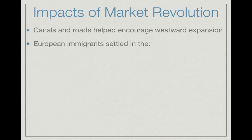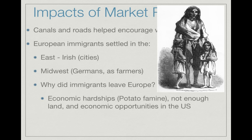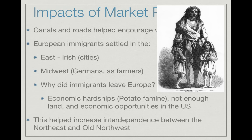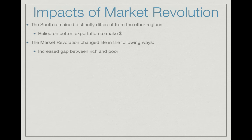Canals and roads encouraged westward expansion. Two key immigrant groups came from Europe: the Irish, settling in eastern and midwestern cities, and the Germans, settling as farmers in areas like Ohio and Indiana. They left Europe due to economic hardships — particularly the potato famine in Ireland — and were drawn by economic opportunities in the United States. This helped increase interdependence between the Northeast and the Old Northwest, connecting those regions more so than the South, where immigrants were not settling in significant numbers.